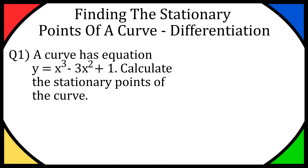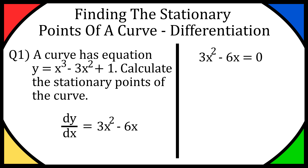Hey everyone, so today I'm going to show you how to find the stationary points of a curve using differentiation. I'm going to do that by going over question 1 — if you have any comments or questions throughout the video, just drop them down below. So question 1 says a curve has equation y is equal to x cubed minus 3x squared plus 1. Calculate the stationary points of the curve. First thing you want to do is differentiate the equation. dy over dx is going to be 3x squared minus 6x, and we're going to set that equal to 0 because the gradient will be 0 at the stationary points.